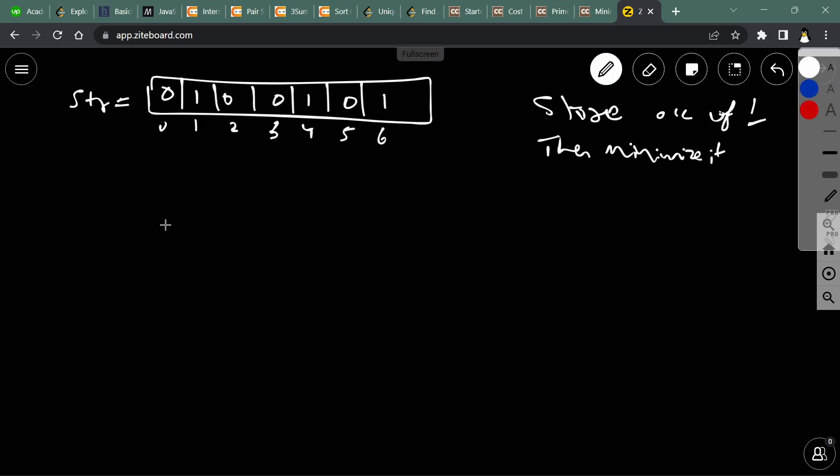Let's store the occurrences of one. Let's denote it ps1. This is our occurrence array, so the one is at first place, next one is at fourth place, and last one is at sixth place.